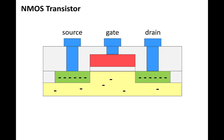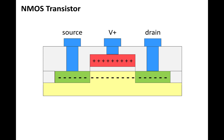The operation of an NMOS transistor is based on the flow of N-type, or negative, charge. Initially, there's a low concentration of negative charge in the silicon substrate and high concentrations of negative charge in the source and the drain. If we apply ground to the gate, the like charges repel and the negative charge in the substrate is pushed down away from the source and the drain. But if we apply a positive voltage to the gate, then positive charge flows onto the gate, and opposites attract, and the negative charge in the substrate is attracted to the region between the source and the drain, and we get a conducting channel that effectively closes the switch.